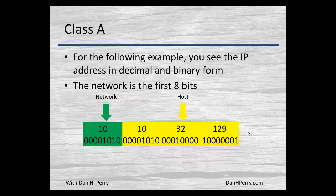As we see in this diagram, the first octet — the green number — is the network, and that gives us the remaining 24 bits for the host portion.